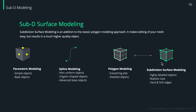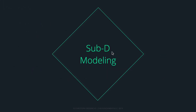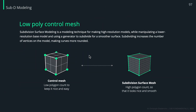In this series we will only cover the basics of subdivision surface modeling so that you know what it is and how to use it. To really get into the depths of modeling you have to go further than what this fundamental series will provide. So let's have a look at sub-D modeling and what it actually does. First, let's get a basic understanding of the technique. Subdivision surface modeling is a technique for making high resolution models while manipulating a low resolution model.